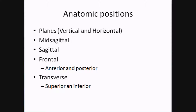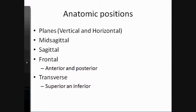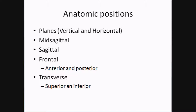Let's start with anatomical planes. Planes essentially divide the body into different sections. Your normal planes are on vertical and horizontal axes. For the vertical plane — top to bottom — let's talk about midsagittal. Midsagittal means you are dividing the body into two equal halves — a left side and a right side.